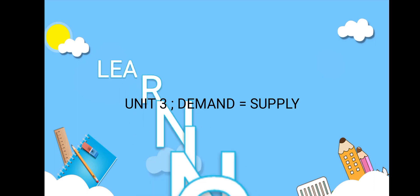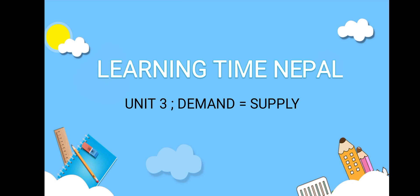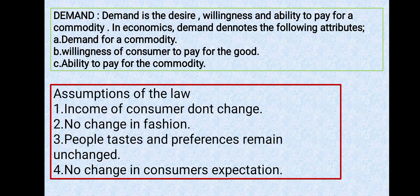Hello everyone, welcome to Learning Time Nepal. This is Class 9 Economics, Unit 3: Demand and Supply. In this class, I am going to discuss: what is demand, the law of demand, its assumptions and limitations, supply, the law of supply, its limitations, and market equilibrium.